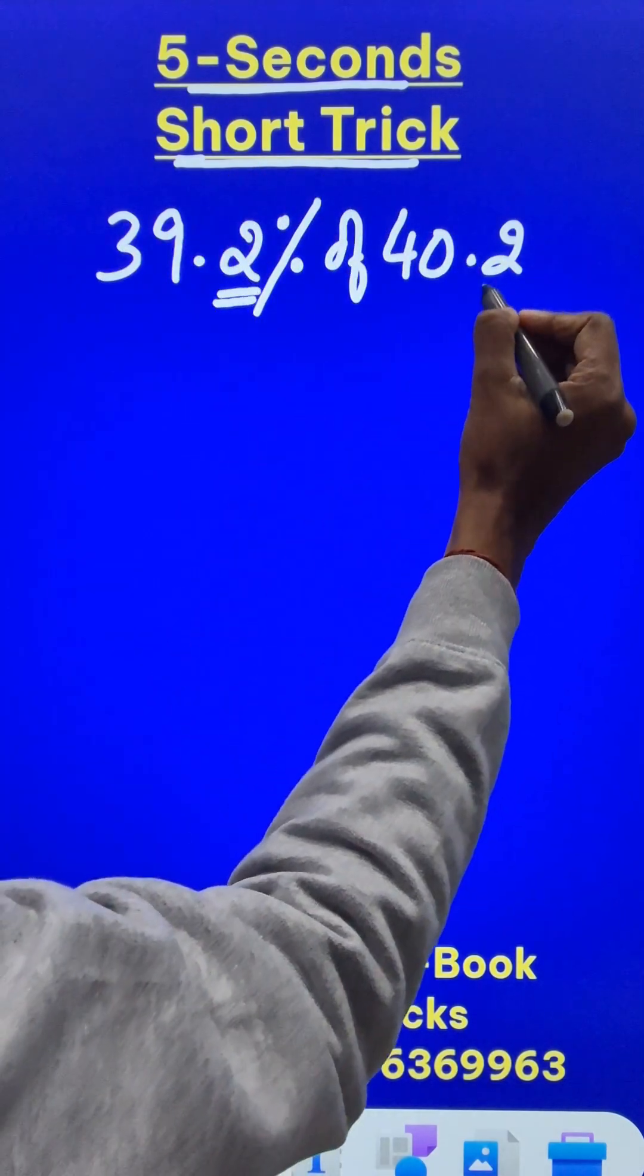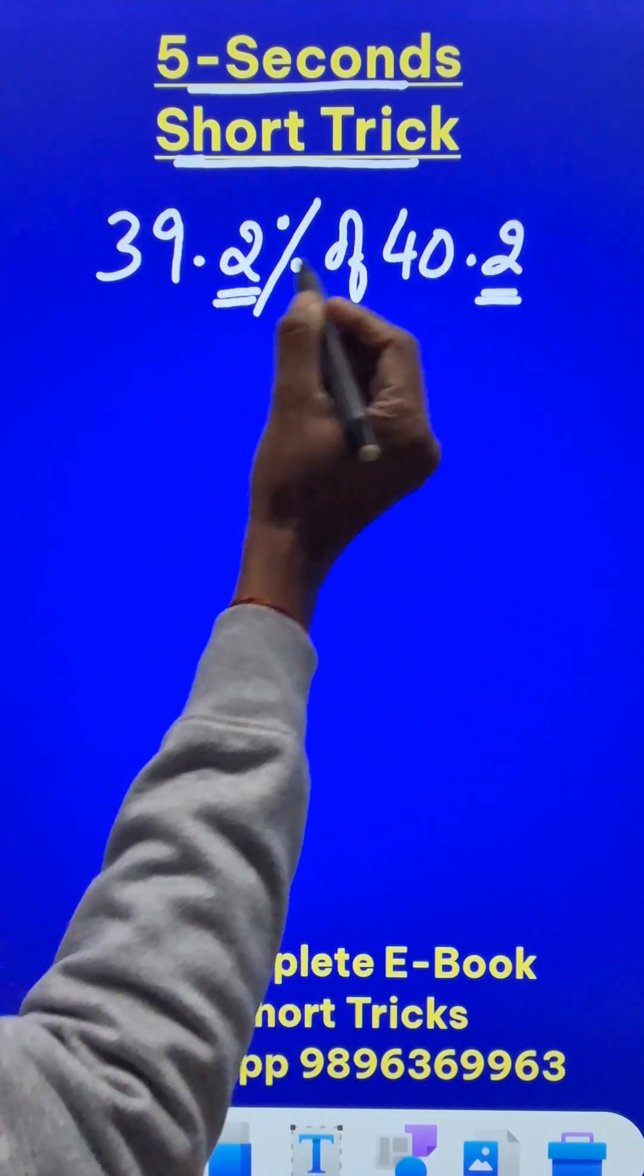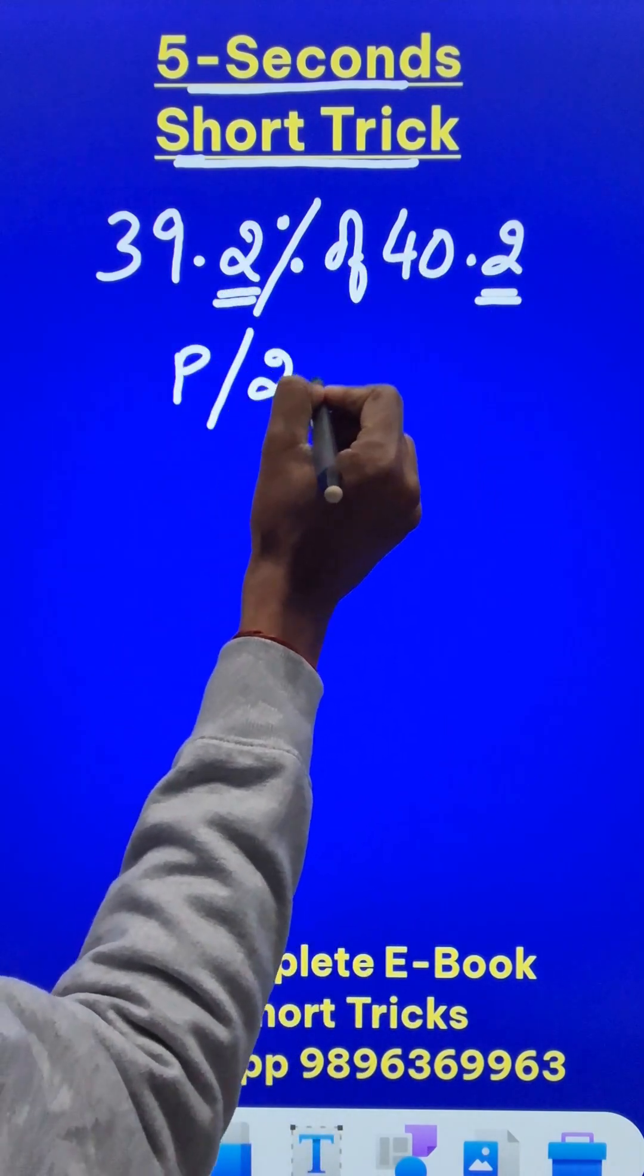I can see that the two numbers end in 2. Both of them are ending in 2. So we have a short trick called P, 2S4.